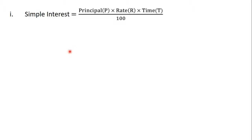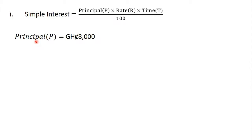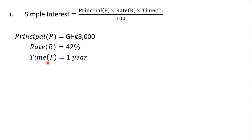From the previous video, we learned that simple interest is equal to principal times rate times time divided by 100. The principal is the loan that Amankwa took from the bank, which is 8000 Ghana cedis. The rate is 42%, and we are calculating for the simple interest at the end of the year, so the time is 1 year.